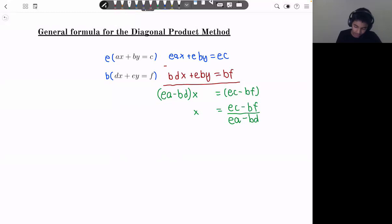And now that we find the value of x, let's see what it actually means in our equation. So it's ec minus bf divided by ea minus bd. And as you can see, this is just the diagonal product method.